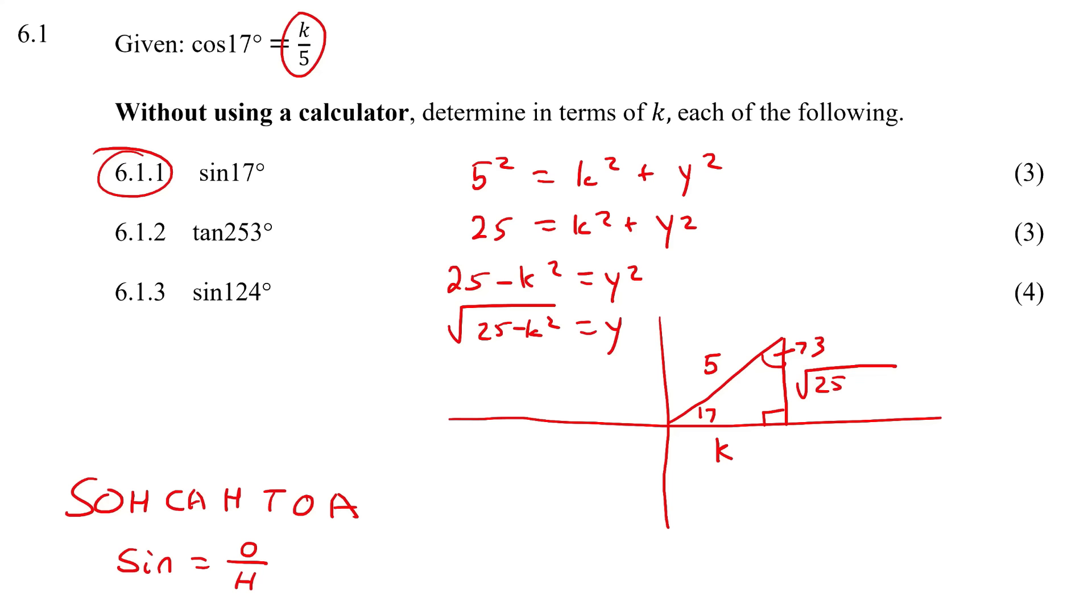So sin 17° - sin is opposite over hypotenuse of the 17 degrees, so that's going to be opposite which is square root of 25 minus k², and the hypotenuse is 5.